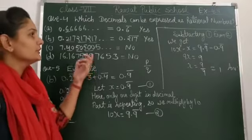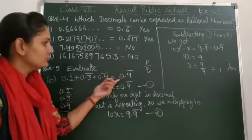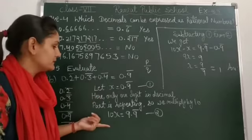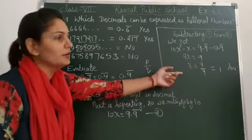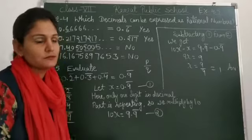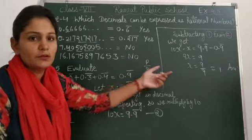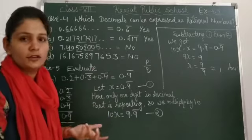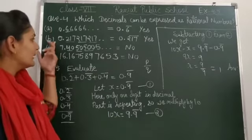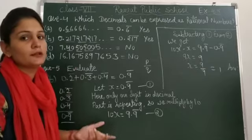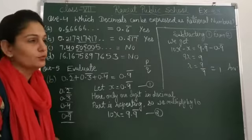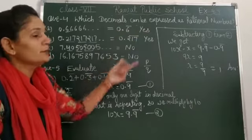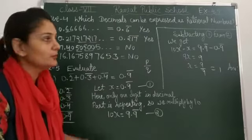And the last question was question number 3. Like this, 0.9 bar. We will put a letter. This will be x, 10x. And then we can find out the value of x. So the values which are repeating can be changed to rational numbers.